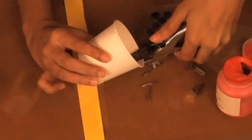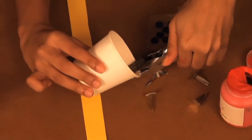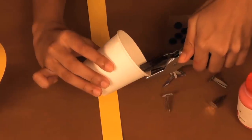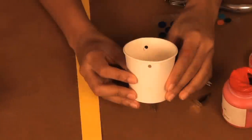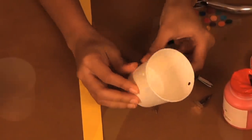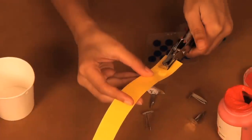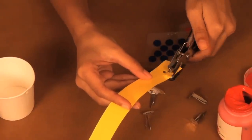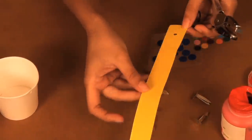So take your paper cup and punch two holes close to the brim and opposite each other. And likewise on the strip of construction paper that forms the handle, punch two holes on either side.